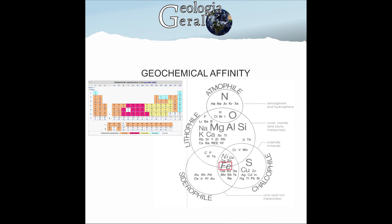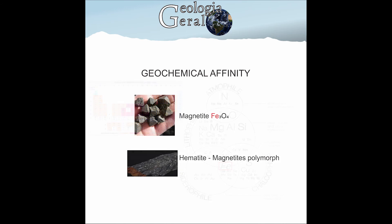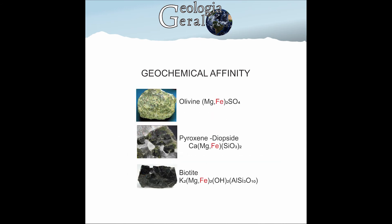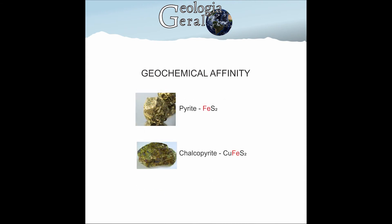For example, iron obviously has a higher siderophile affinity, but is commonly found in biotite, pyroxene, and olivine structures, where it is found with lithophile affinity. In addition, it can present itself in sulfide structures such as pyrrhotite or chalcopyrite, showing chalcophile affinity in this case.